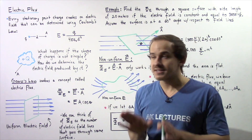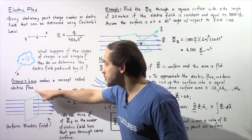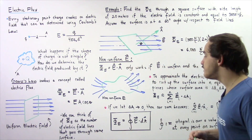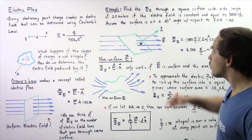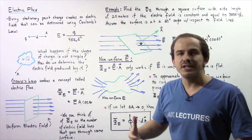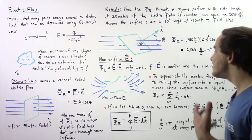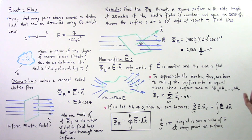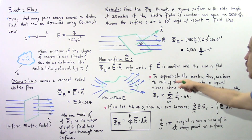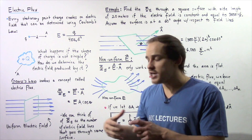Up to this point, we have discussed electric flux for the special case when our electric field was constant and when the surface was assumed to be flat. What happens if our electric field is not constant and when our surface is not flat, as shown in the following region? Suppose this green region is a three-dimensional region and the electric field is not uniform. In such a case, to approximate the electric flux, we have to divide or cut up the surface into n equal elements whose surface areas are given by delta A1, delta A2, all the way up to delta An.